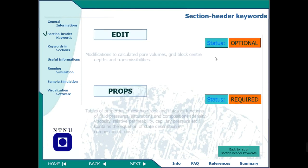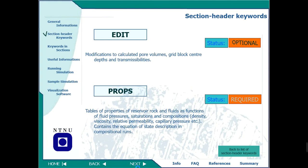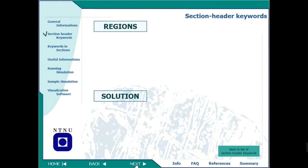We have the EDIT section, which is optional — normally we don't use it. The PROPS section includes rock and fluid properties: relative permeability, capillary pressure, viscosity, and all such information. Properties of rock and fluid are usually given here in the PROPS section.